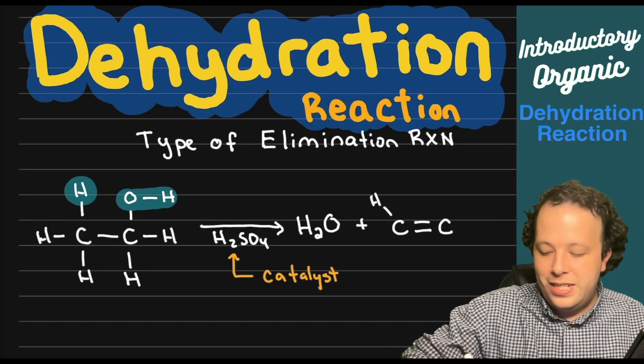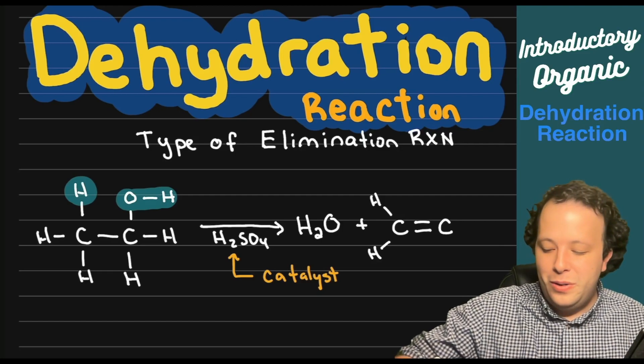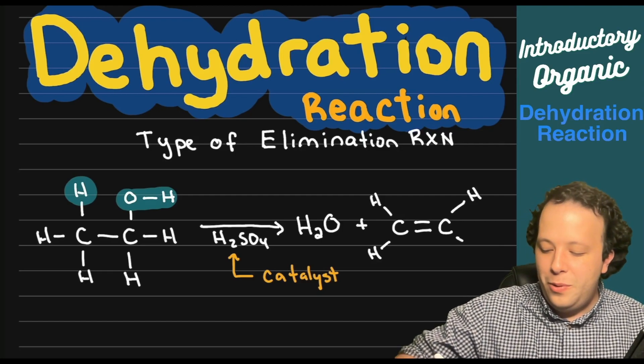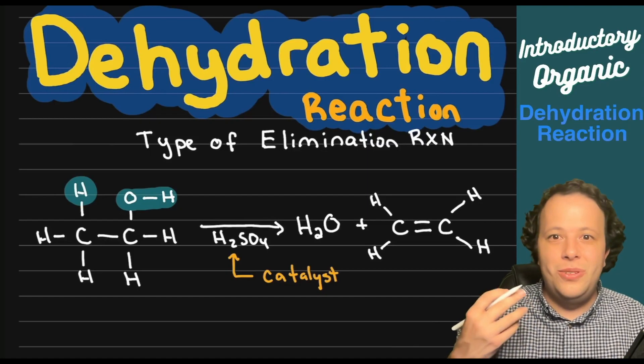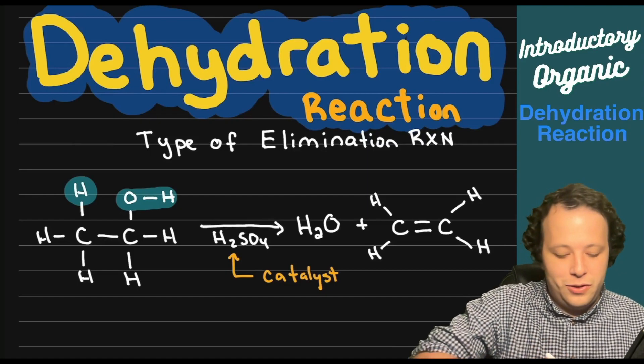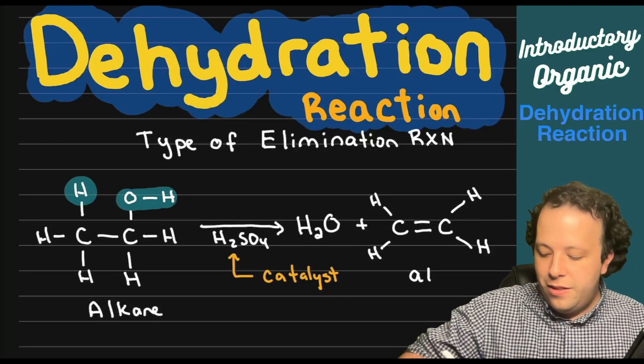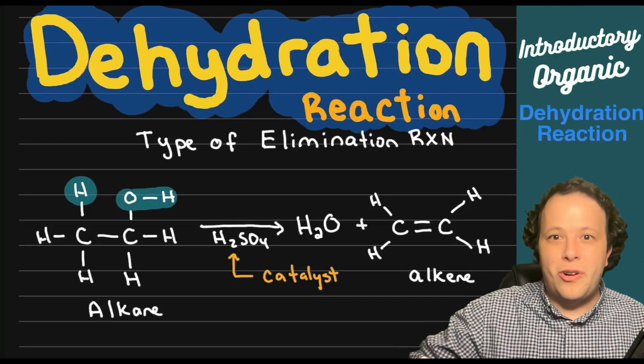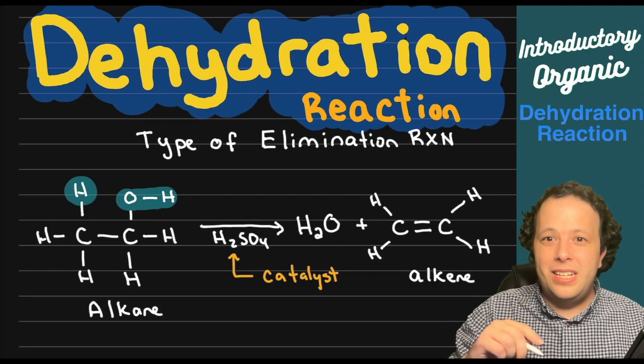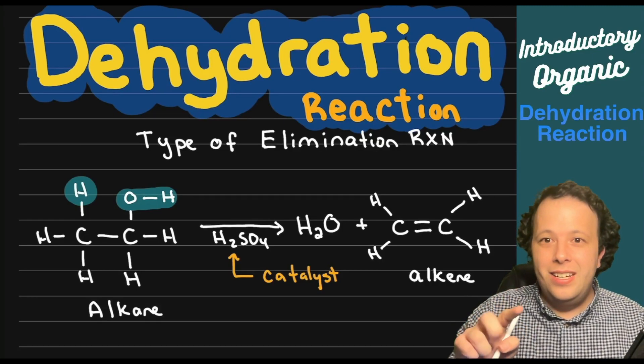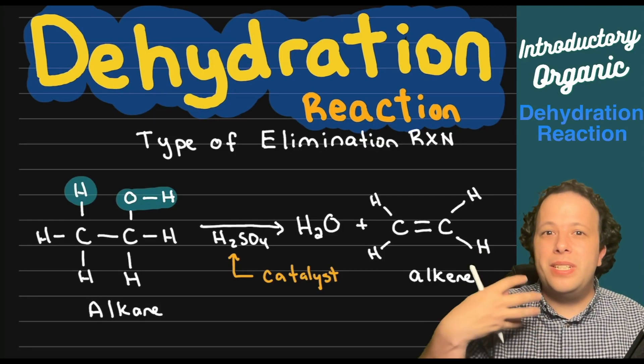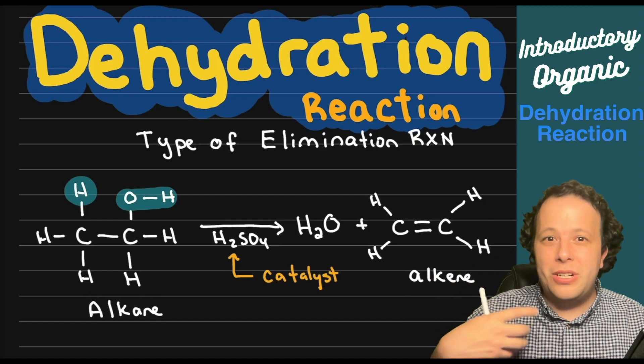So we will have that CH2 on one carbon and then we will add our hydrogens to the other. So this goes from an alkene to an alkene through this elimination process. So you can also see that it goes from one reactant to two products. So it's the opposite of what we saw with addition.